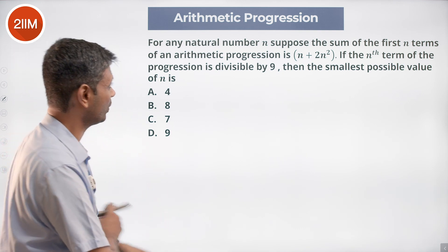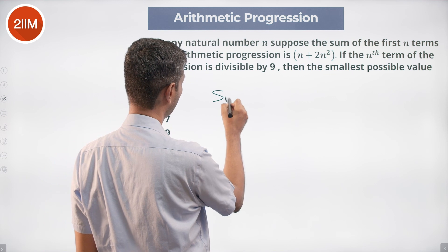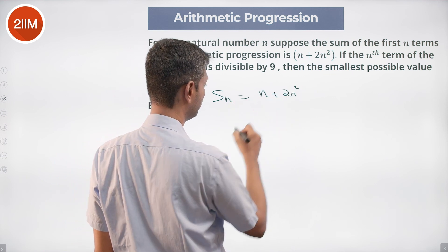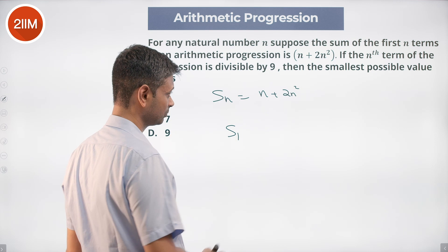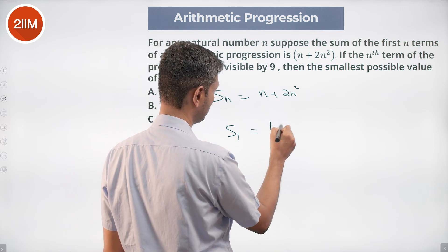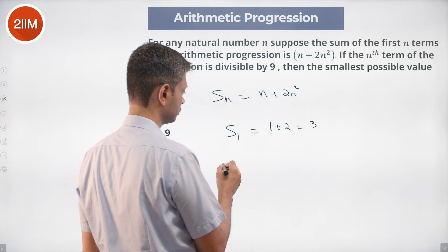Given S_n = n + 2n², I'm going to find the sum up to n terms. First, find sum up to 1 term: S_1 = 1 + 2(1) = 3.